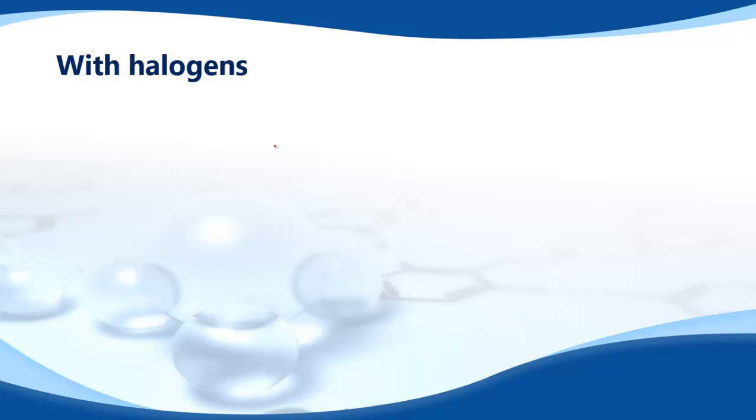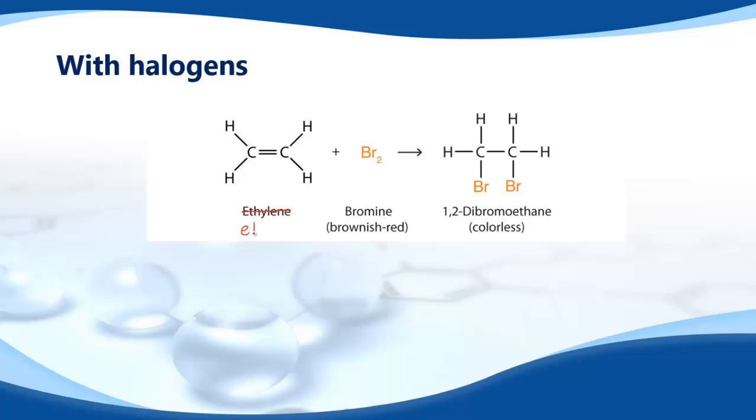Next, with halogens. So here we have ethene again, and it's reacting with bromine, Br2, and the product is what we call a dihalogeno alkane. Dihalogeno alkane means it has two halogen atoms.